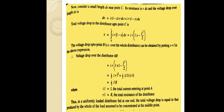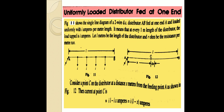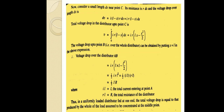Now consider a small length dx near point C. Its resistance is R dx. The voltage drop over the length dx is dV equals I(L minus x) into R dx, which gives IR(L minus x) dx. Therefore, the total voltage drop up to point C is V equals the integral from 0 to x of IR(L minus x) dx.